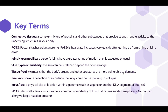Here are some key terms you need to know before watching this lecture. Connective tissues are a complex mixture of proteins and other substances that provide strength and elasticity to the underlying structures in the body. POTS is postural tachycardia syndrome, which is when the heart rate increases very quickly after getting up from sitting or lying down. Joint hypermobility is when a person's joints have a greater range of motion than is expected or usual. Skin hyperextensibility is when the skin can be stretched beyond the normal range. Tissue fragility means that the body's organs and other structures are more vulnerable to damage. Pneumothorax is a collection of air outside the lungs which could cause the lungs to collapse. Locus or loci are a physical site or location within a genome. MCAS is mast cell activation syndrome, a common comorbidity of EDS that causes sudden anaphylaxis without an allergy or allergic reaction present.